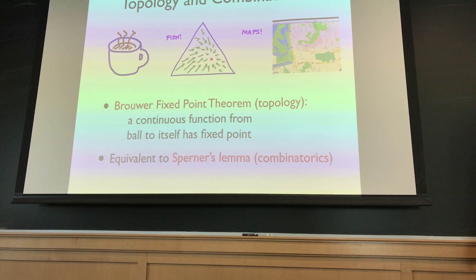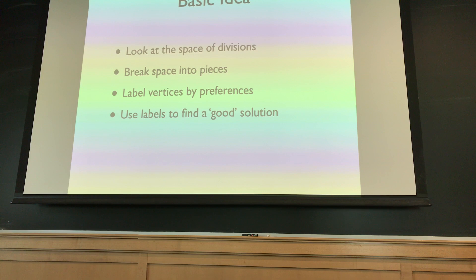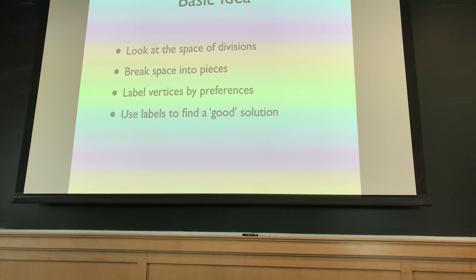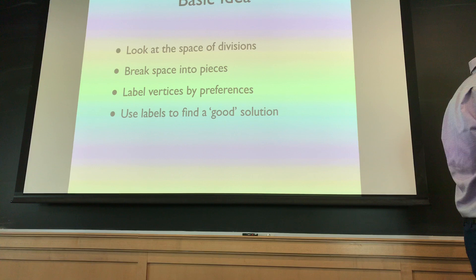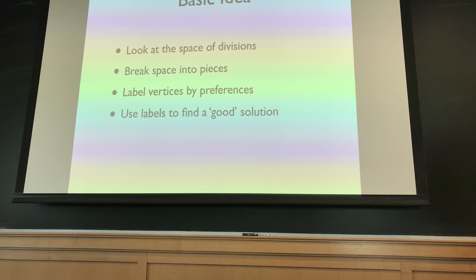The basic idea: if I have some collection of possible divisions, I think of that as a geometric space. I'm going to break this space into lots of pieces and label certain things by preferences — I like piece one, I like piece two, I like piece three — and then use these labels to find a solution. An advantage of this approach is it won't cut the cake into a bazillion pieces. It only requires n minus one cuts for n people. The trade-off is it gives approximate solutions — people are happy up to epsilon.